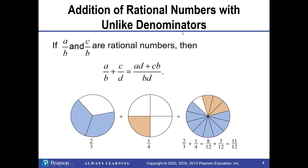If we do not have like denominators — if your denominators are different, like a/b and c/d — you're going to have to get a common denominator first. The common denominator would be b·d, which means the first fraction has to be multiplied by d on top and bottom, and the second one has to be multiplied by b on top and bottom. Then we can add them together.